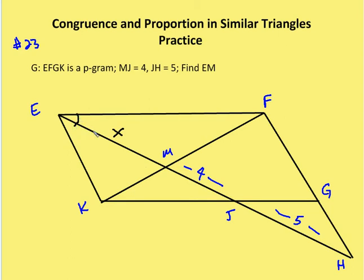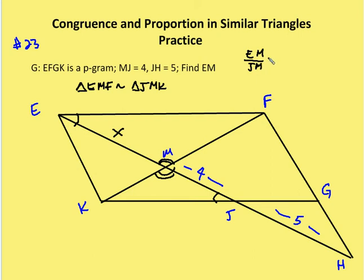Angle EFM is congruent to angle KJM, and we also have congruent vertical angles. So triangle EMF is similar to triangle JMK by the AA similarity theorem. I can write EM over JM equals MF over MK. I also have another pair of similar triangles using alternate interior angles cut by a transversal through two parallel lines, and the vertical angles theorem.